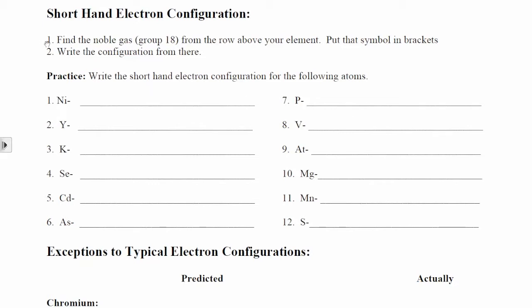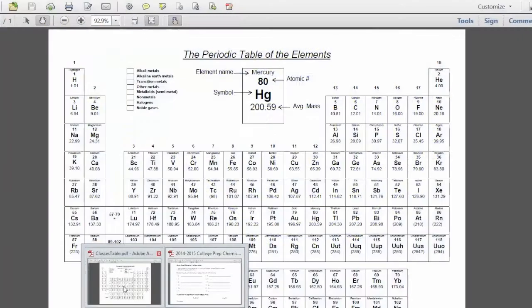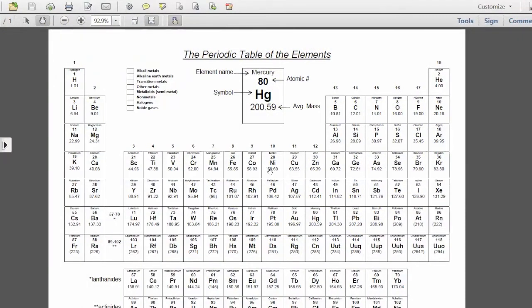The first step tells you to find the noble gas from the row above your element. We're going to do nickel and yttrium together. If we look at nickel on the periodic table, I'm going to move up one row and across to the noble gases. For nickel, I would put argon.